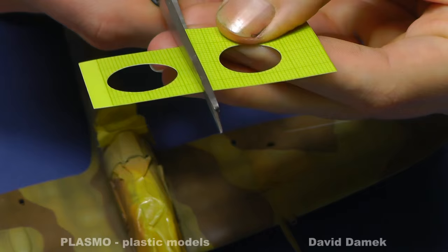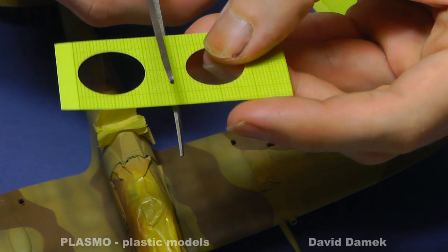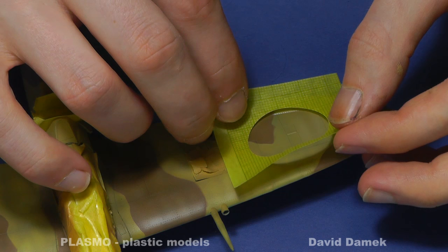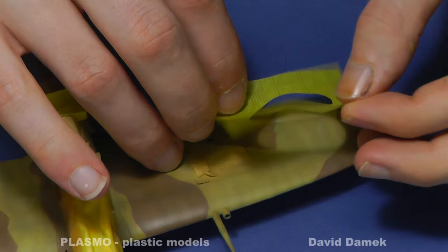Now when I have all stencils prepared, I can stick them on the model. This is a crucial moment because you must put them into the correct position. When you use common water slide decals you can simply move them a little, but you cannot obviously do it when they are paint-sprayed. So choosing a precise position is very important.